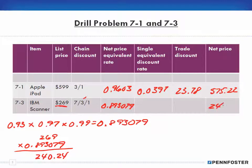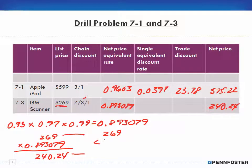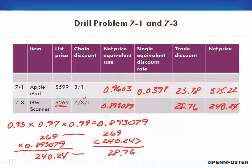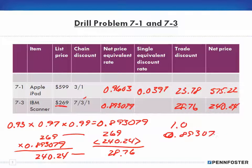I end up with two hundred forty dollars and twenty-four cents as my net price. The difference between my list price and net price is my trade discount: $269 minus $240.24 gives twenty-eight dollars and seventy-six cents. For my single equivalent discount rate, I subtract the net price equivalent rate from 1: 1 minus 0.893079 equals 0.106921.